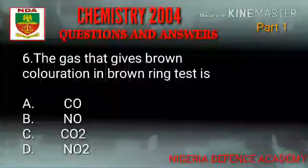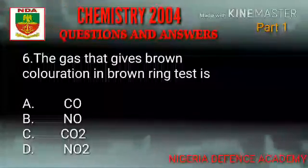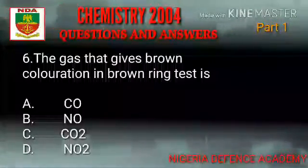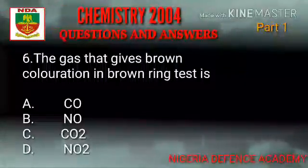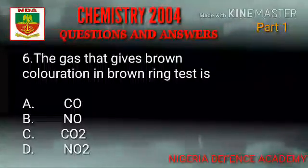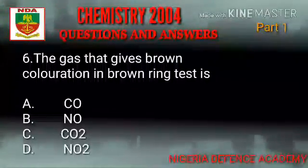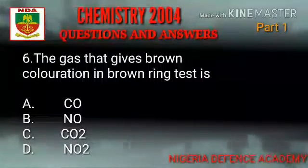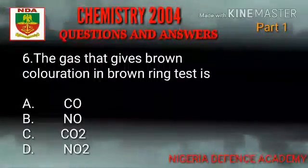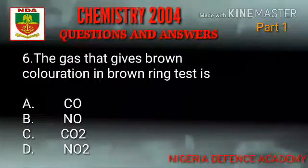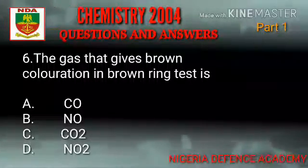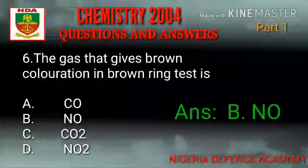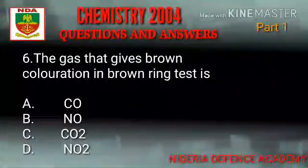The next question: the gas that gives brown coloration in the brown ring test is known to be what? Option A: carbon dioxide. Option B: nitrogen oxide. Option C: carbon monoxide. Option D: nitrogen dioxide. The answer is option B — nitrogen oxide.